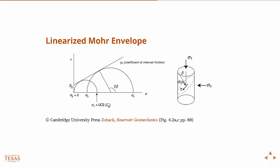And we introduce this thing called cohesion. We introduce here two new terms. S0 is the y-intercept of this line. The slope of the line, mu, is called the coefficient of internal friction.